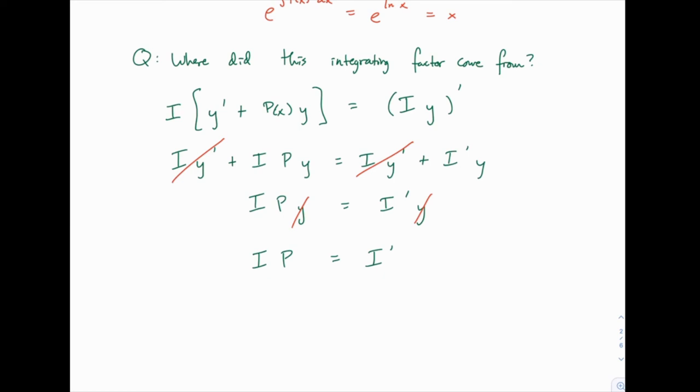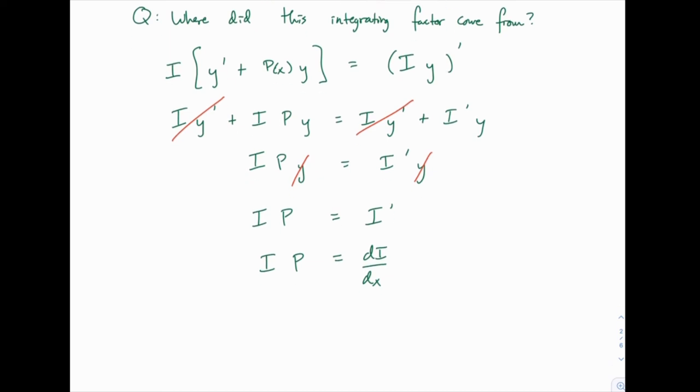This it turns out is a separable differential equation. If I write this as di over dx, and then I have i times p, notice that that's a separable differential equation, where I can separate and multiply the left side by dx and the right side by 1 over i.